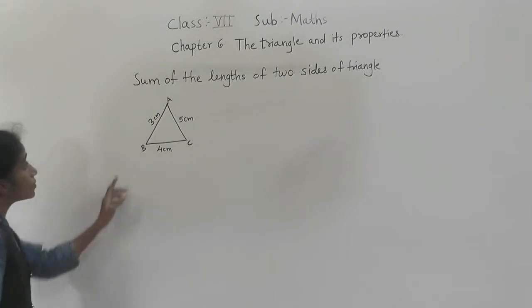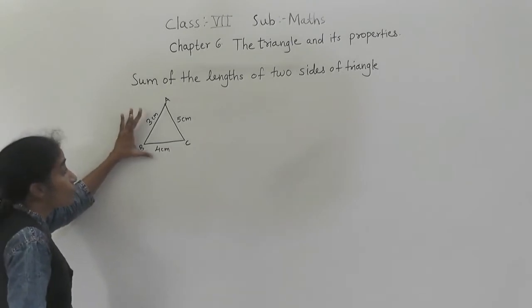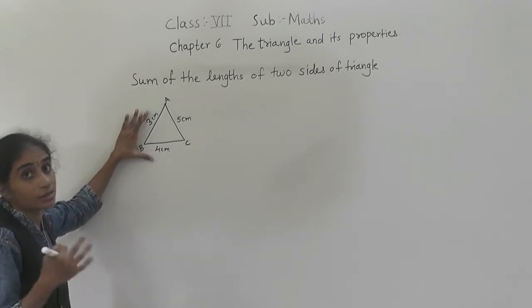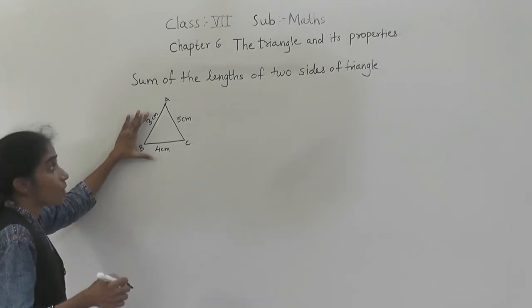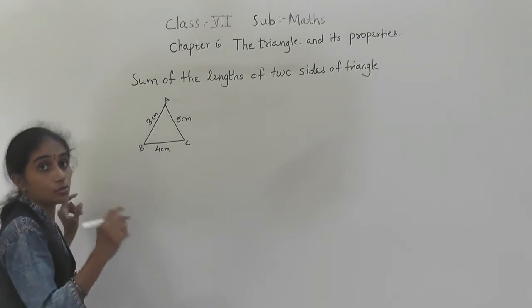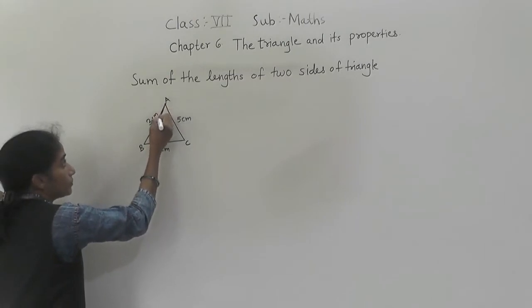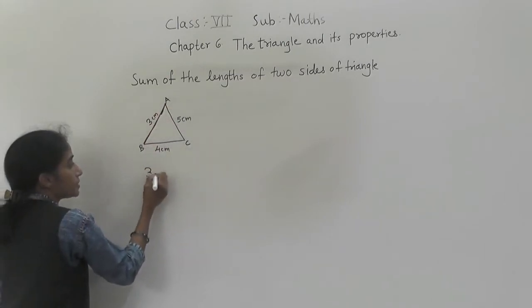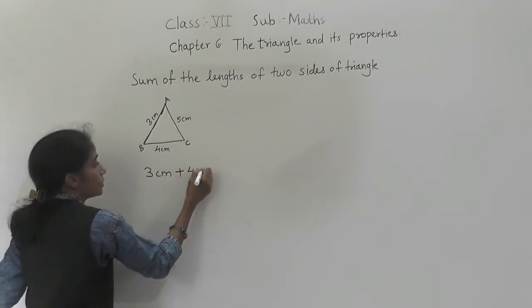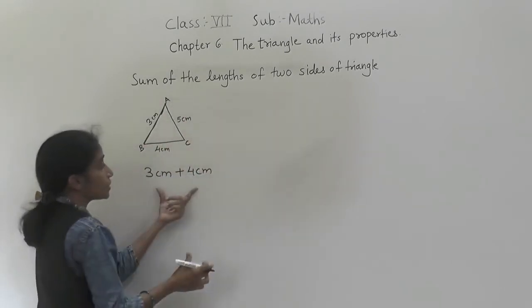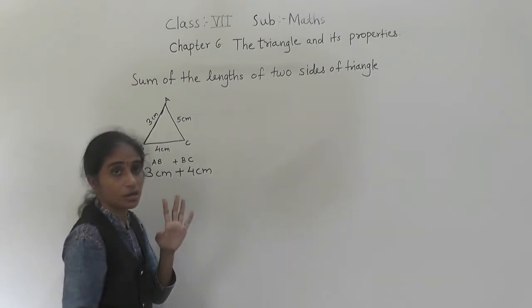Now let's learn about the sum of the lengths of two sides of a triangle. The sum of the lengths of two sides of a triangle is greater than the third side. Now I will take AB — AB is 3 cm and BC is 4 cm. So the sum of the lengths of two sides of a triangle must be greater than the third side.